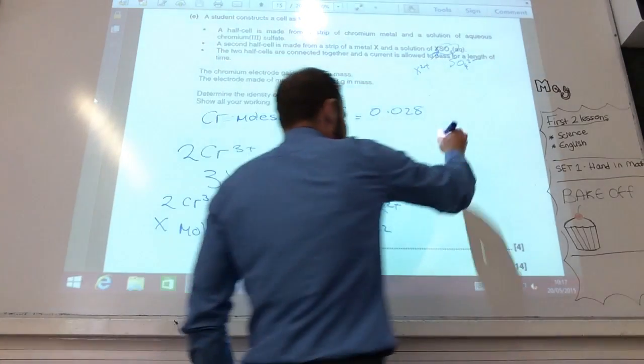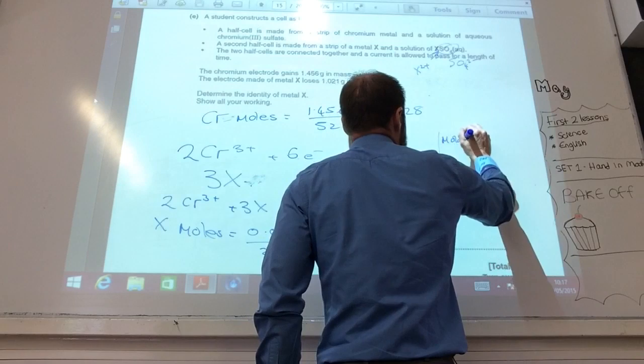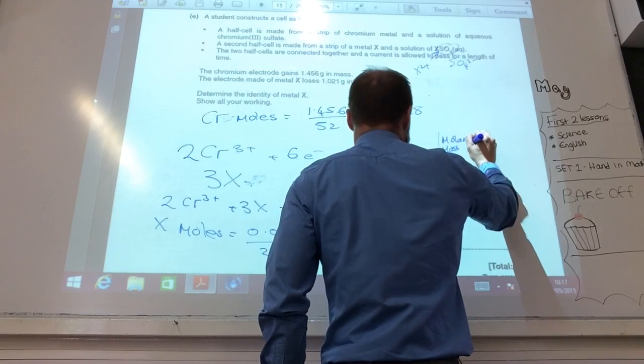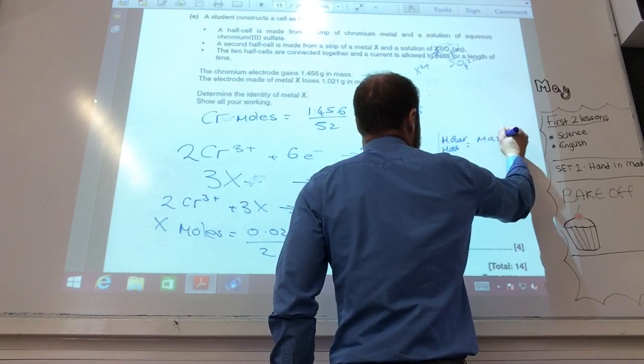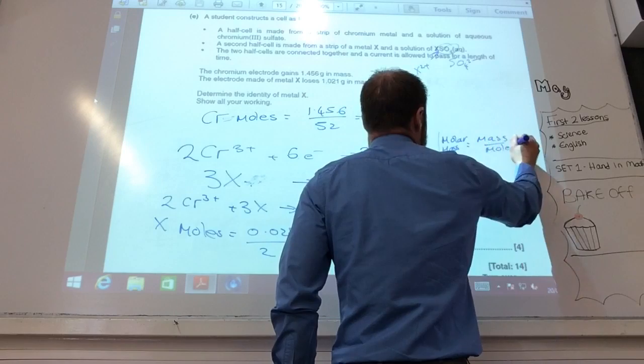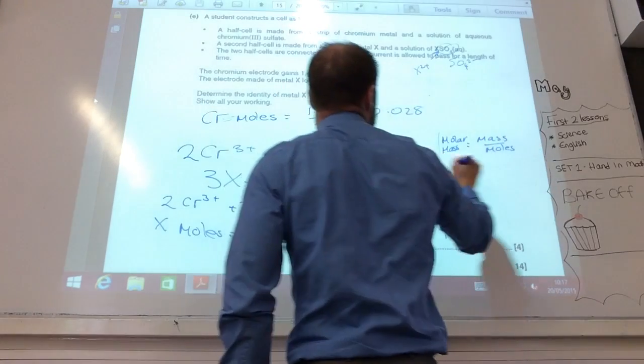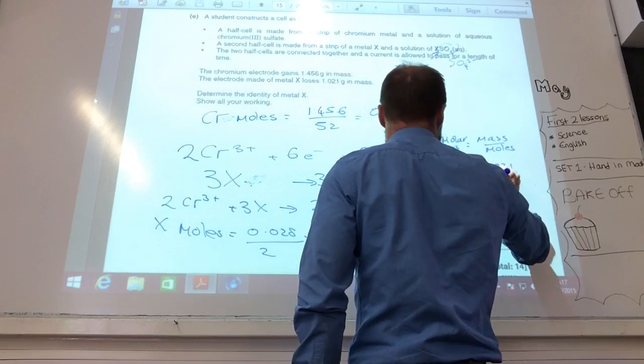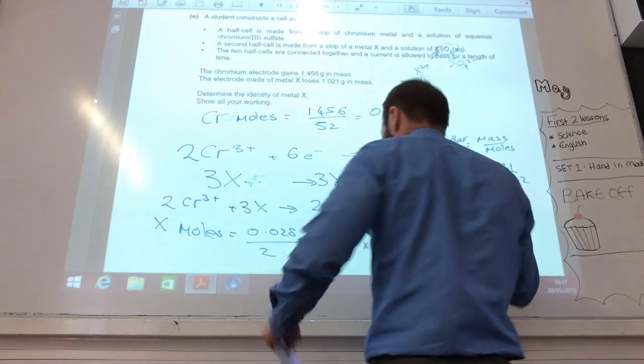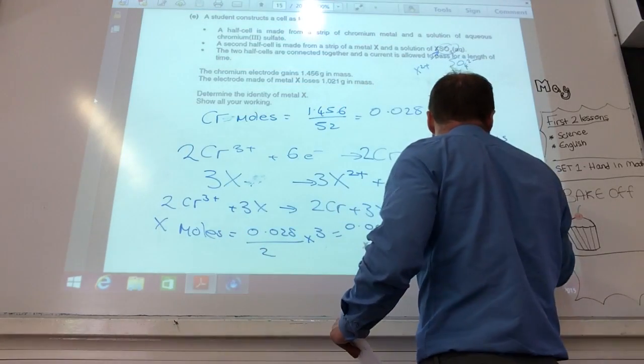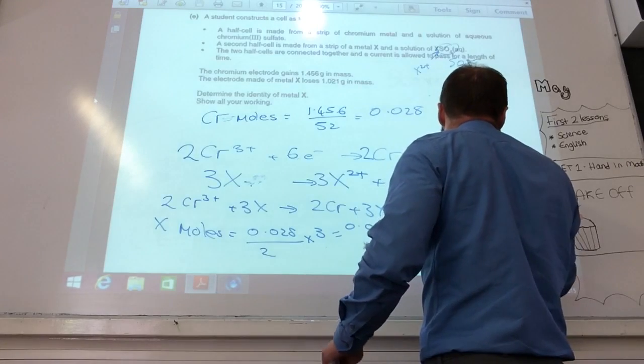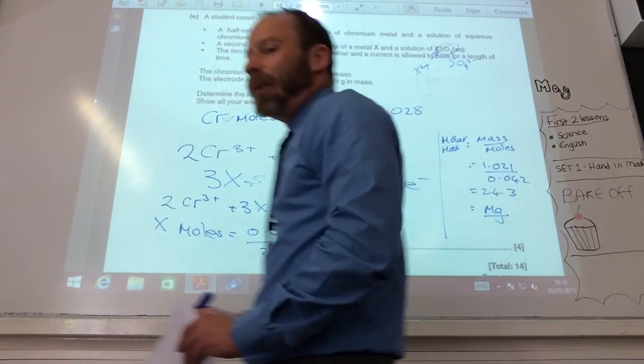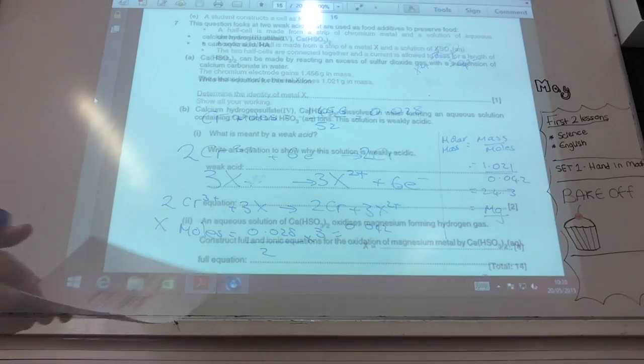Then it's just a simple case, your molar mass is going to be mass over moles. They've told me it loses 1.021. That equates to 0.042, and therefore it comes to 24.3, and therefore if you look at the data tables, it's magnesium.